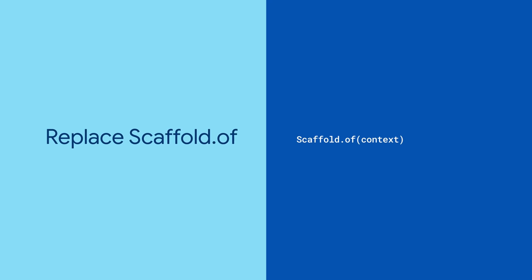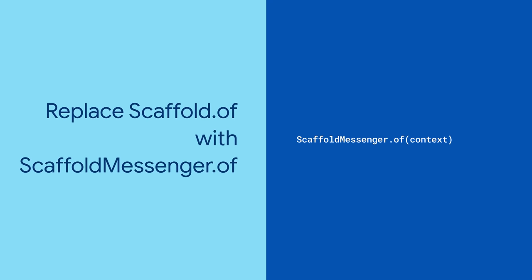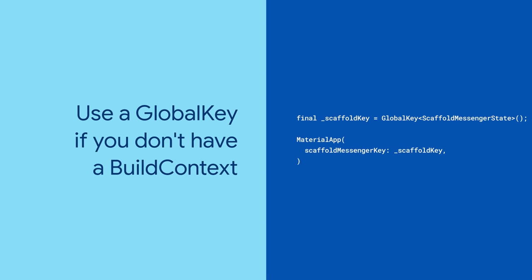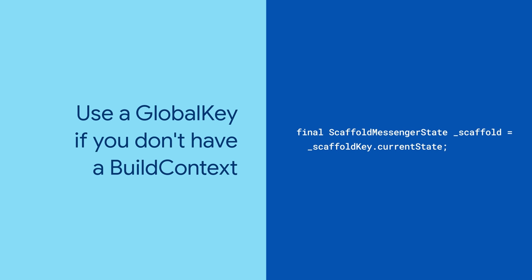Replace the deprecated method with ScaffoldMessenger.of(context). But what if you don't have a build context on hand because you're deep inside your state management machine? In that scenario, pass a key to your MaterialApp and then use it later to access the ScaffoldMessenger.